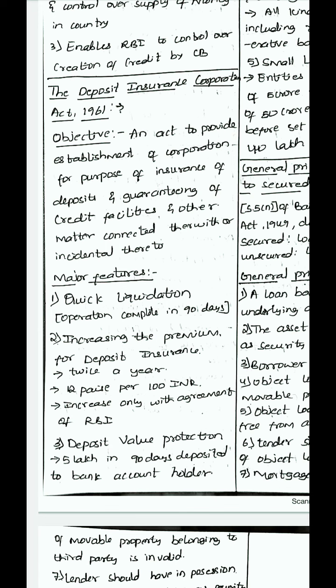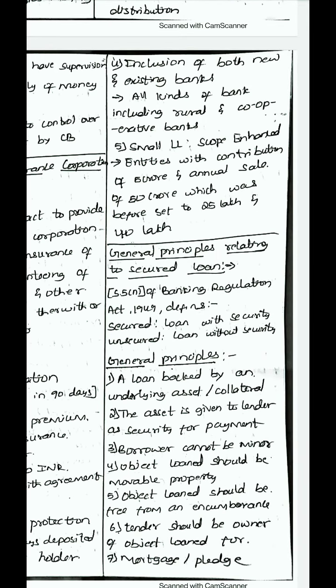The premium can only be increased with the agreement of RBI. Deposit value protection: the corporation protects account holders who have deposited money, providing up to 5 lakh rupees within 90 days to a bank account holder who makes a claim. Inclusion of both new and existing banks — all kinds of banks including rural and cooperative banks are included. Small LLP scope has been enhanced: entities with a contribution of 5 crore and annual sales of 50 crore, previously set at 25 lakh and 40 lakh respectively, now fall under revised provisions.